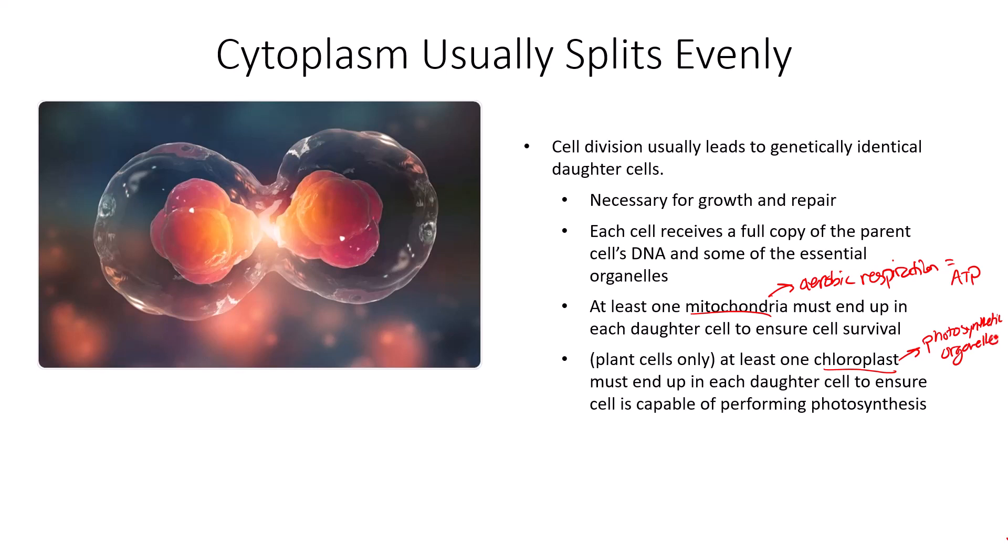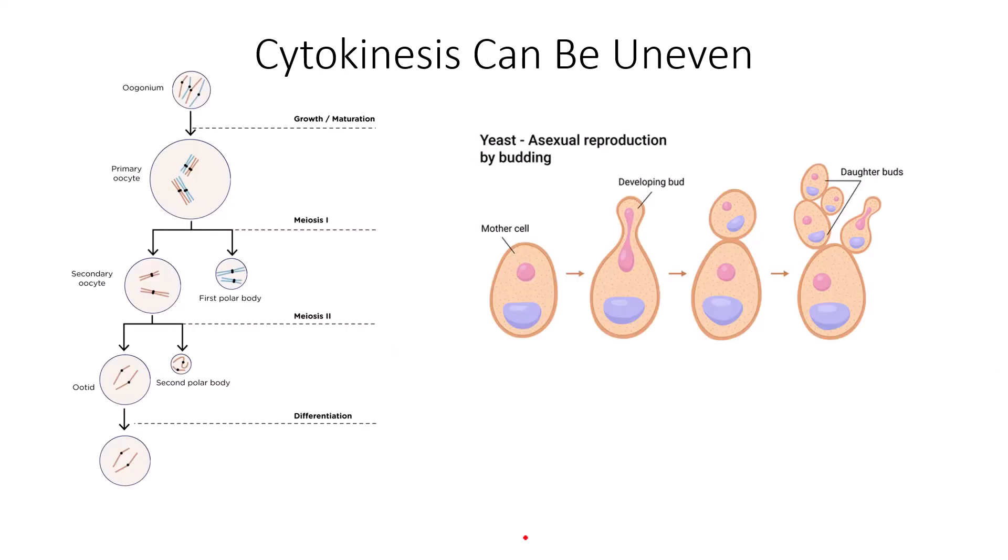However, cytokinesis can be uneven. As the second understanding indicated, oogenesis in female gamete production and yeast budding are two examples that are important to know about.